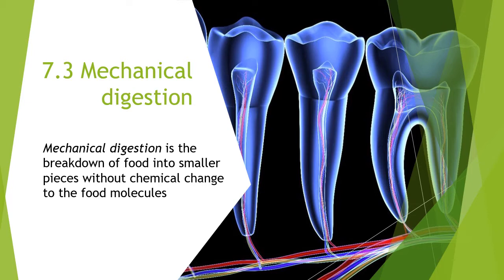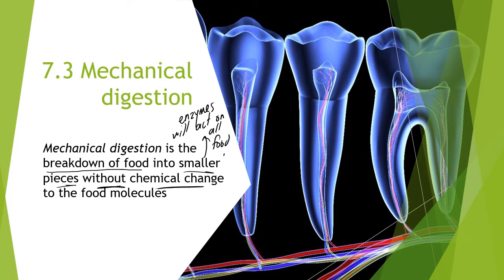Mechanical digestion is simply the breakdown of food into smaller pieces, but with no chemical change happening. As we chew in our mouth, we're just breaking the food down into smaller and smaller bits. The purpose of this is to make sure that enzymes can act on all the food during chemical digestion — so mechanical digestion aids chemical digestion.